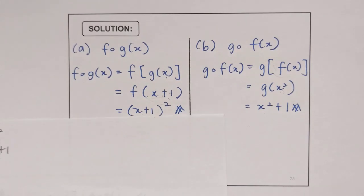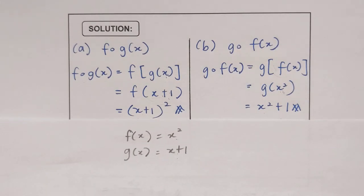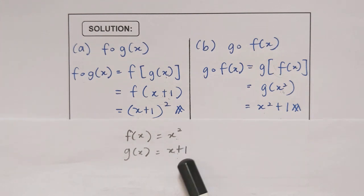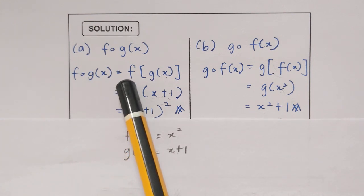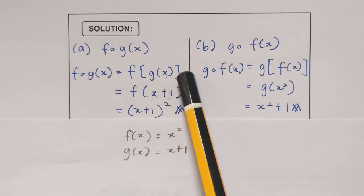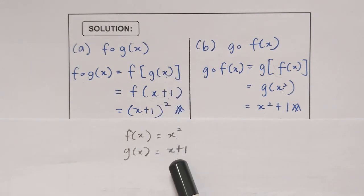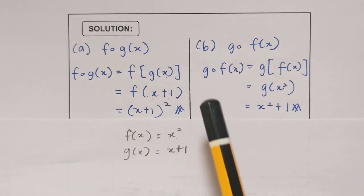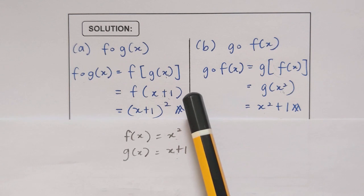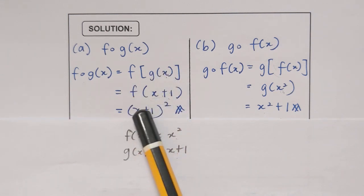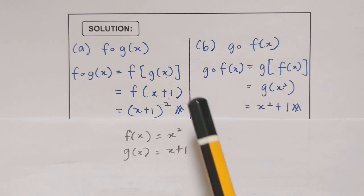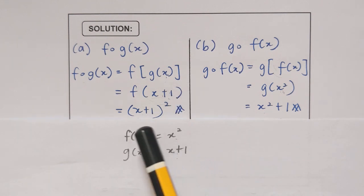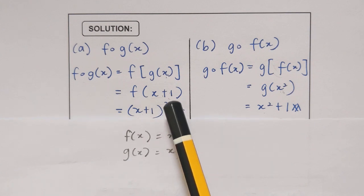So this is the solution. Our function f(x) is x squared and g(x) is x plus 1, and we need to find f(g(x)). You can write that as f bracket g(x), and we substitute g(x) here. We know that g(x) is x plus 1, so I put x plus 1 here, and now I need to substitute our new x into our function f, which is x squared. So I substitute x plus 1 into x squared and I get (x plus 1) squared. So this is the answer.